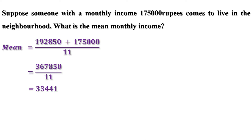This mean is almost one and a half times the monthly income of 10 of these households. The purpose of calculating the mean is to reduce a whole collection of numbers to a single number which gives a general understanding of a situation. But numbers in the collection which are very much less or more than others affect the mean a lot. In our example, a single number much larger than the first 10 changed the mean so much.